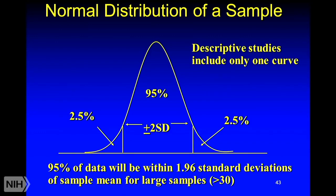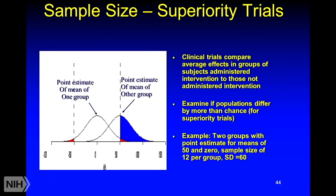This is a descriptive study. I'm only looking at one curve. But what we want to do in a clinical trial that's analytical comparing one group to another is we want to do this. We want to compare one group to another group. Clinical trials compare average effects in groups of research participants who are administered an intervention to another group of people who don't get the intervention.